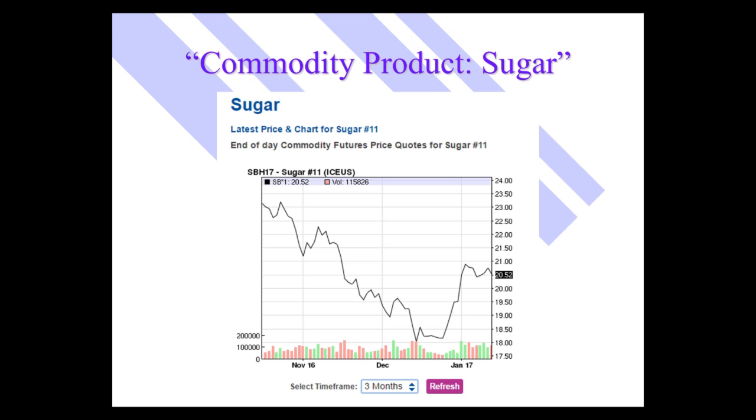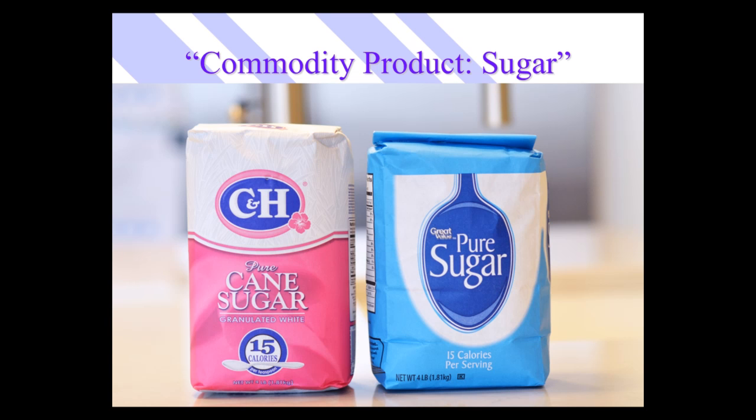But that's not the sugar you go and buy in the store. When you go into the store to buy sugar, you're going to buy something like C&H, the four-pound bag, or Great Value, the four-pound bag. Notice how virtually identical these products are — they both come in the exact same type of bag, both four pounds, both note they're pure sugar on the front, both note 15 calories per serving. These are not very differentiated, and many people will grab the Great Value product because it's cheaper. Sugar is sugar — it's a commodity kind of product.